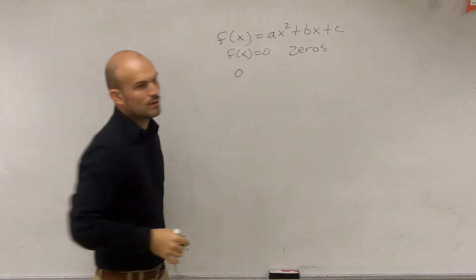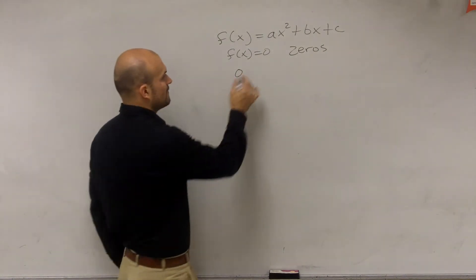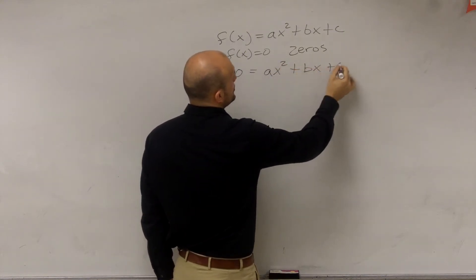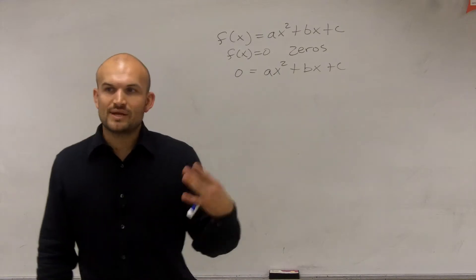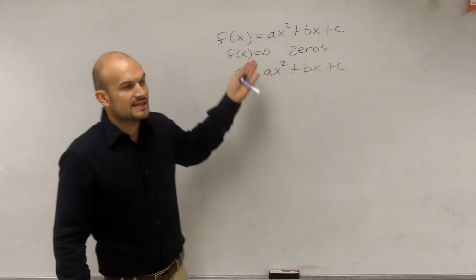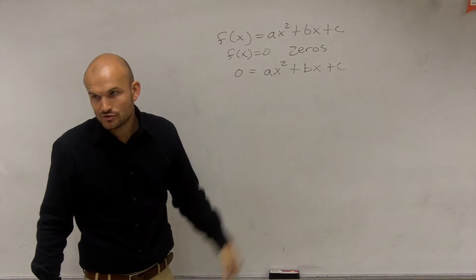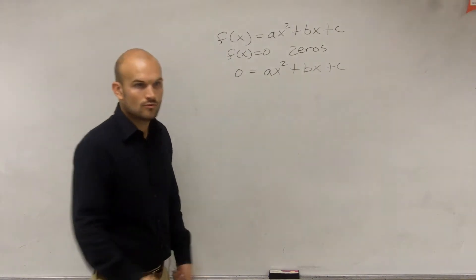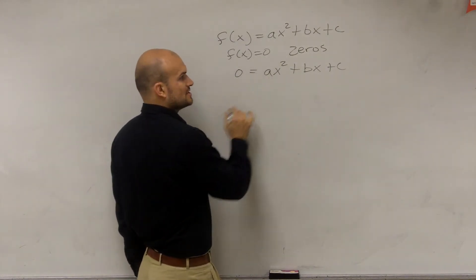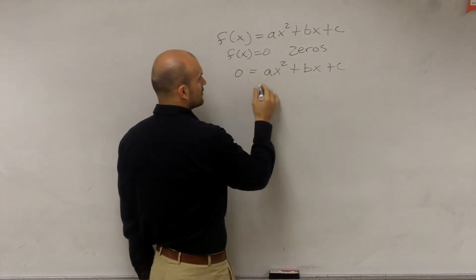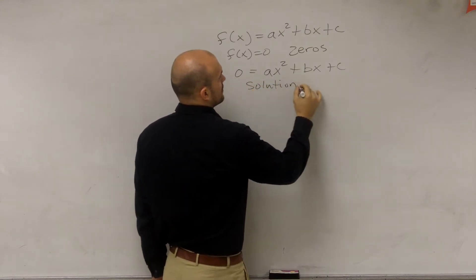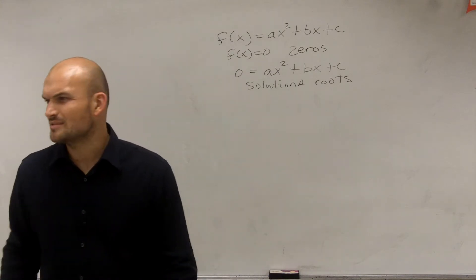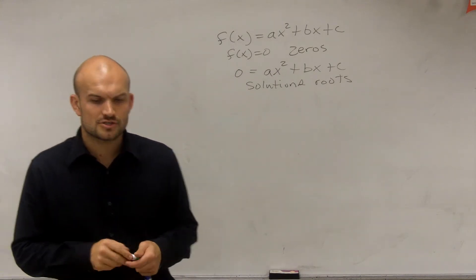Then we started talking about the quadratic equation. And all that is is when we take our function, our quadratic function, and we set it equal to a value, which we're going to use zero. And then what we talked about, when we find the solutions to this, the values of x that make this solution true, we call those the roots. So our solutions are what we call our roots. And that's what we kind of talked about so far about quadratic functions and quadratic equations.